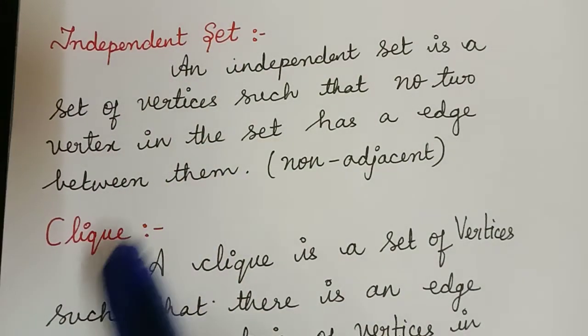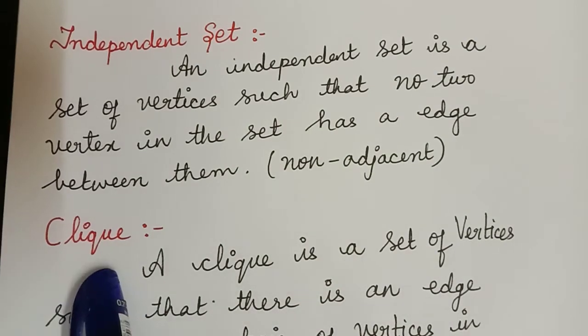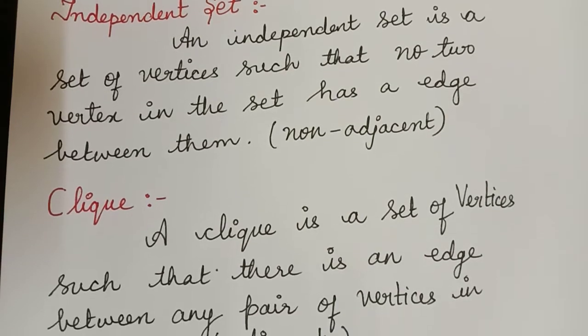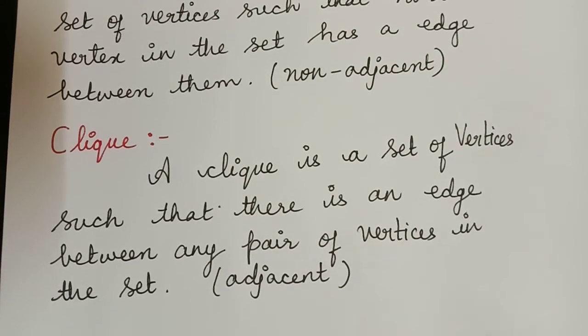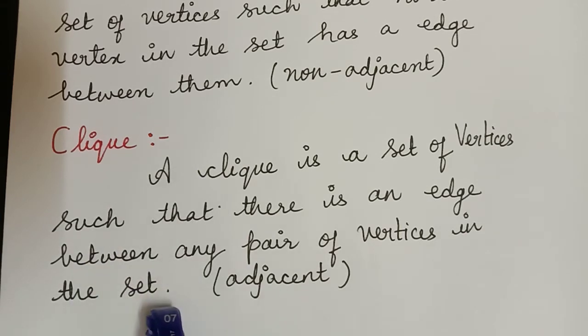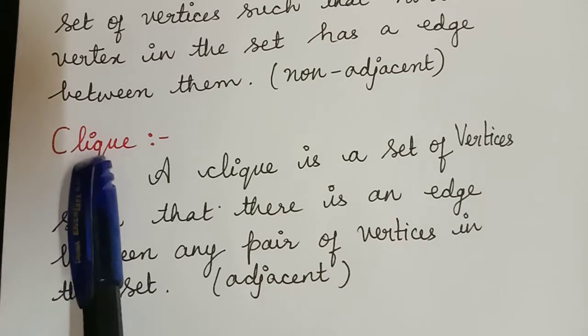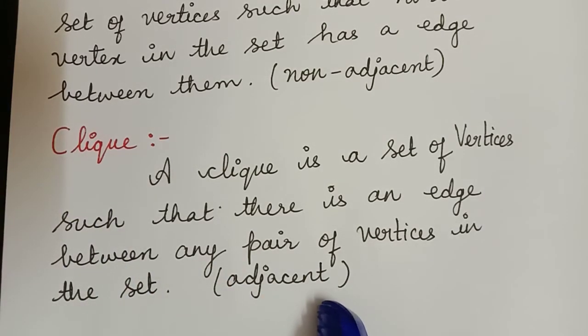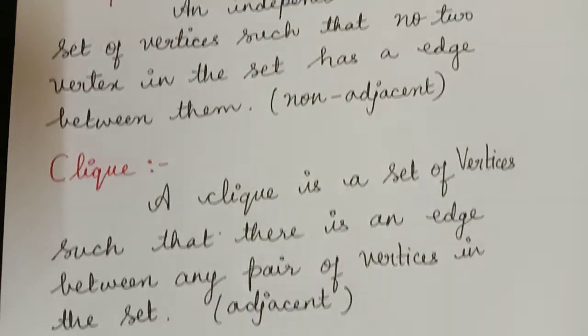A clique is just a complement of the independent set. We could say that a clique is a set of vertices such that there is an edge between every pair of vertices in the set. Whenever we consider any pair of vertices in the clique, those two vertices will be adjacent to one another.